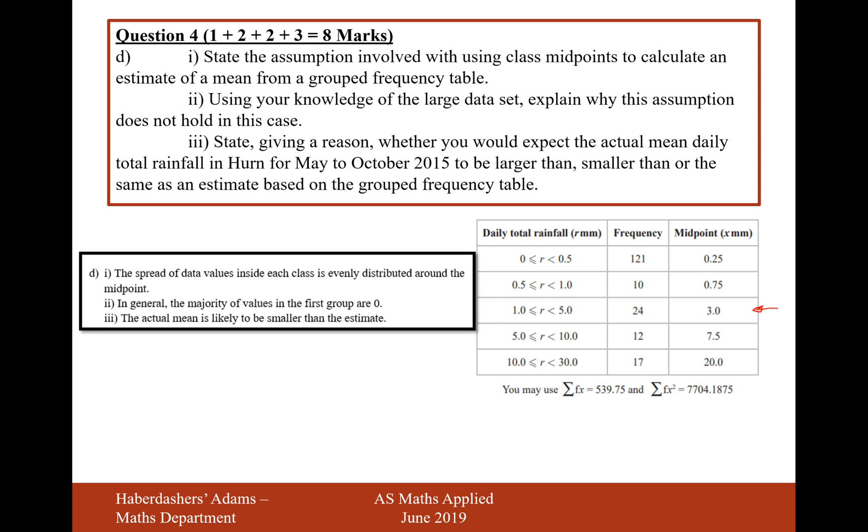Part 2 is using your knowledge of the large data set, explain why this assumption does not necessarily hold in this case. Well, in general, the majority of values in the first group are 0, and generally they're on the lower side of each of these intervals. There's very few values up to 30. There's some, but not all. Most of these values in the lower group here are going to be towards 10, maybe 15. So it's generally towards the lower end of each of these groups.